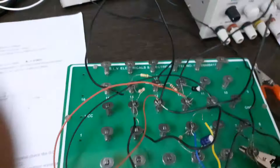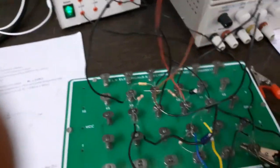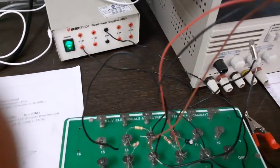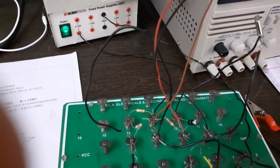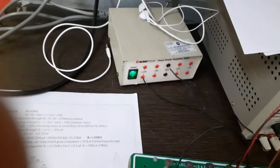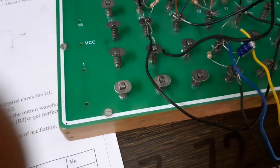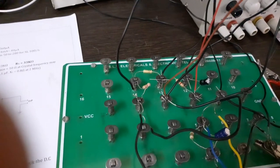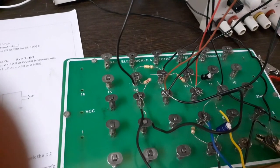Now you can see the circuit. Now this is the transistor SL100 transistor. With the notch we can see, with the notch we can make out that this is your emitter. This is your base and the other one is collector.